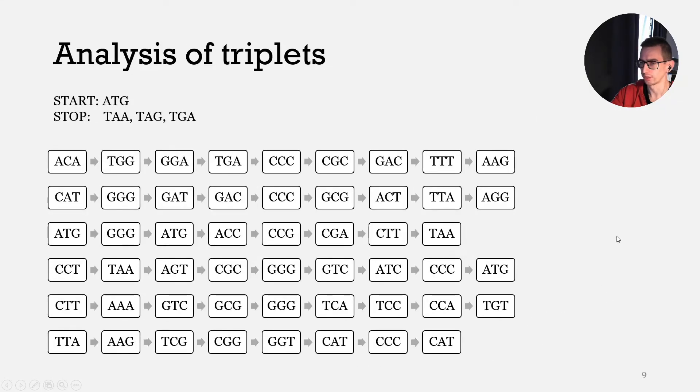Now we have all possible triplet sequences for our DNA strand and for the reverse complementary two. Now our task is to find all possible start triplets and stop triplets. First of all, let's mark start triplets, and then let's mark all stop triplets. Here we have all our stop and start triplets.